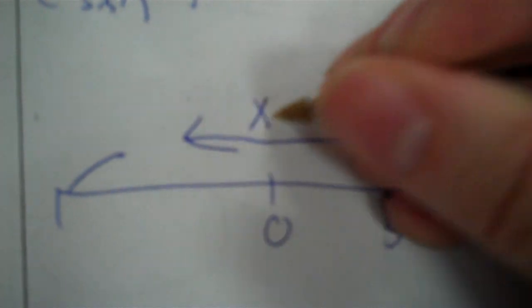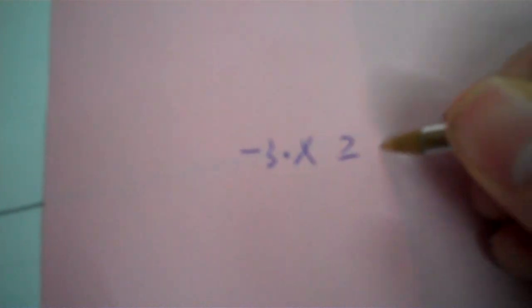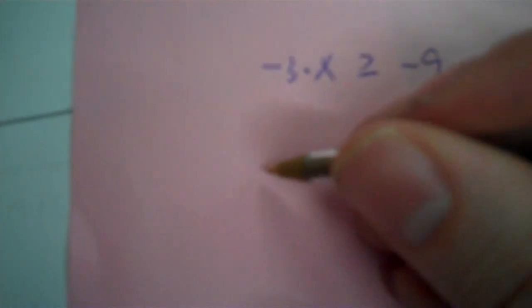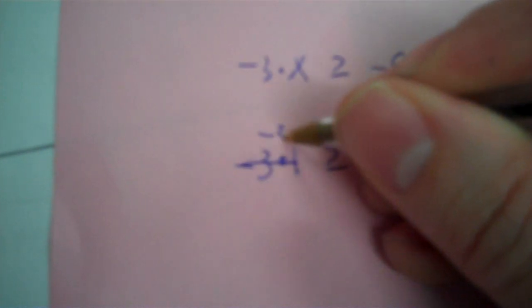On the number line, put 0 and 3. Close the circle because it's equal to. It's now a less than or equal to sign, so shade to the left — x can be any number that way. To check, pick a number less than 3, like 1. Negative 3 times 1 is negative 3. So negative 3 greater than or equal to negative 9 — negative 3 is the bigger number and it's eating correctly.